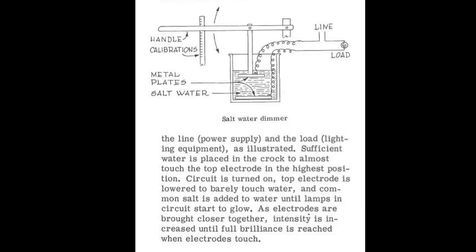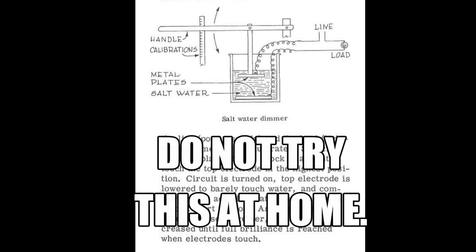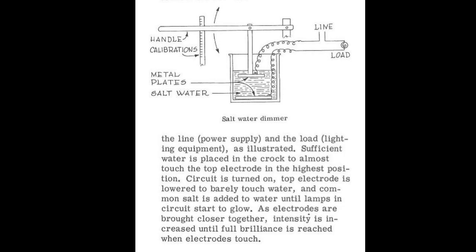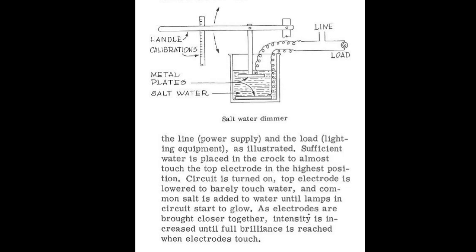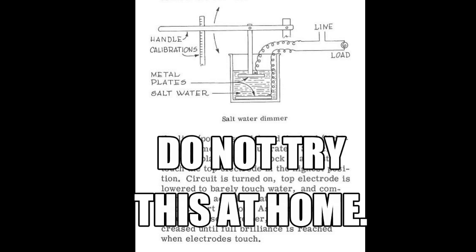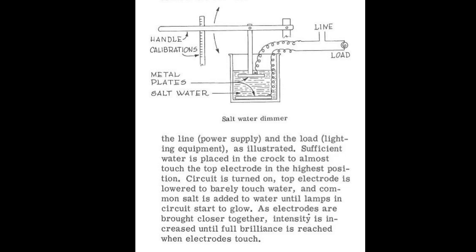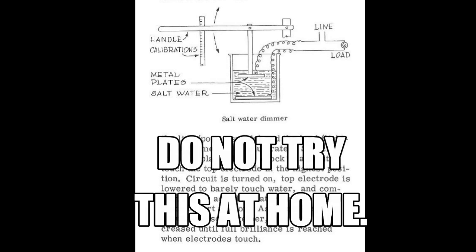Sufficient water is placed in the crock to almost touch the top electrode at the highest position. Circuit is turned on, top electrode is lowered to barely touch the water, and common salt is added to the water until lamps in the circuit start to glow. As electrodes are brought closer together, intensity is increased until full brilliance is reached when the electrodes touch.